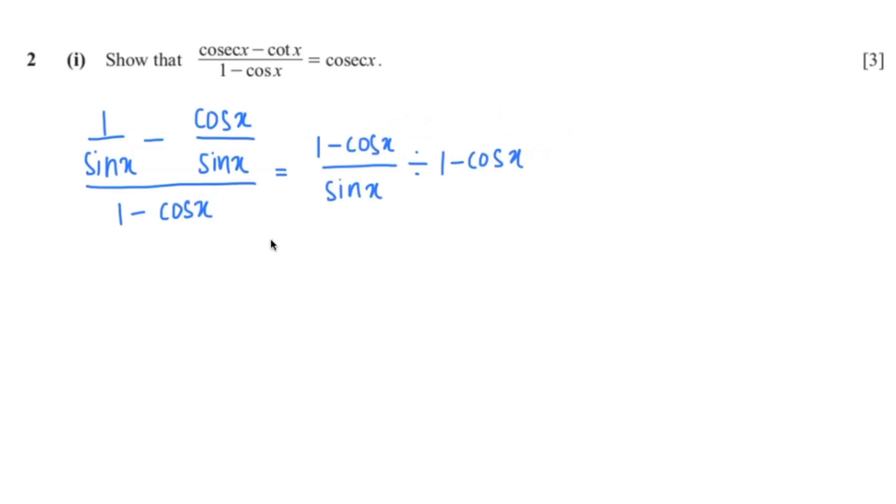And that would be 1 minus cos x over sin x multiplied by 1 over 1 minus cos x. Now we can cross out 1 minus cos x, leaving us with 1 over sin x, which equals cosecant x.